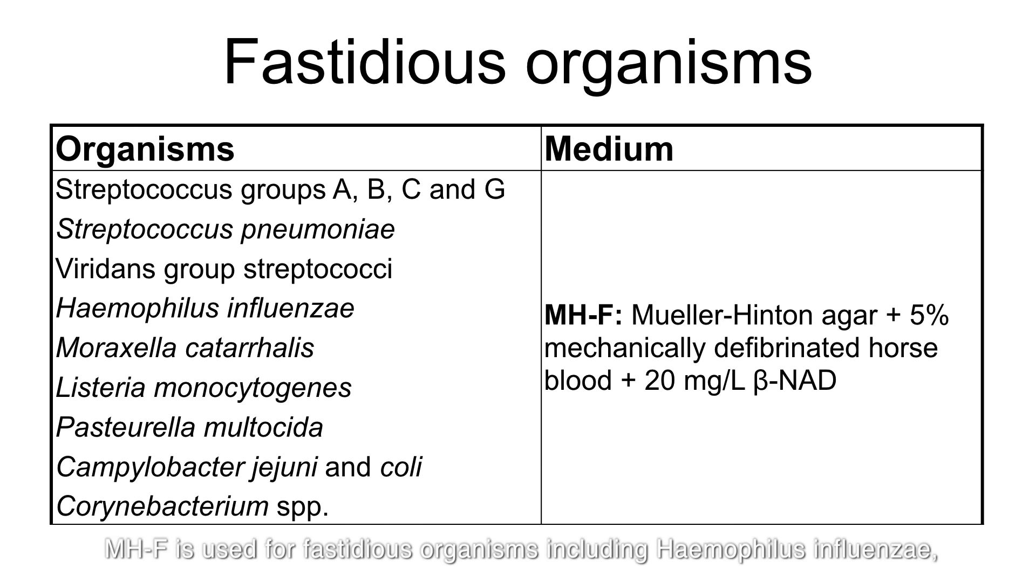The Mueller-Hinton F medium is used for fastidious organisms including Haemophilus influenzae, Streptococcus species, and several others.